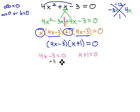Solve the first one by adding 3, 4x equals 3, and dividing by 4, and we get x is equal to 3 fourths.